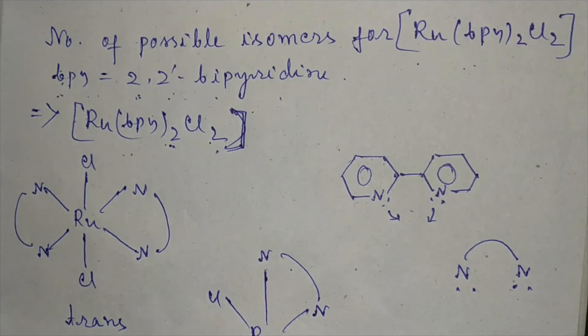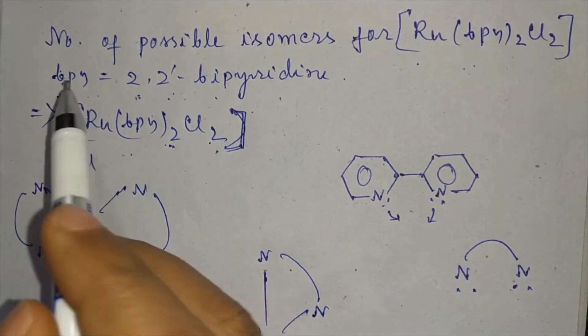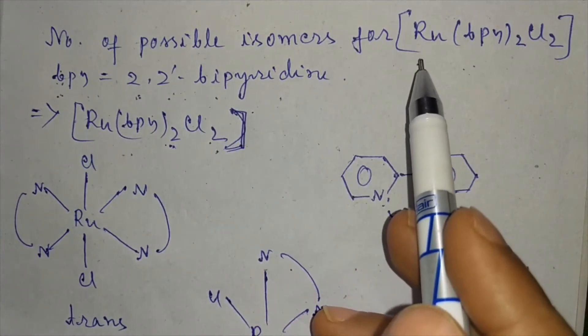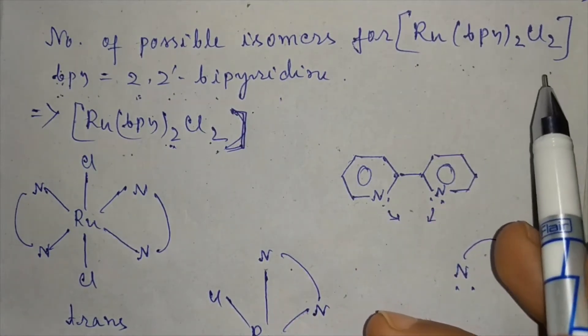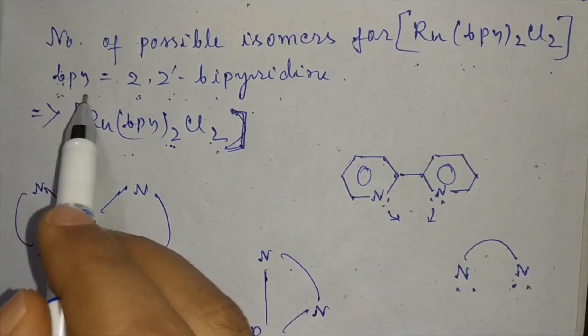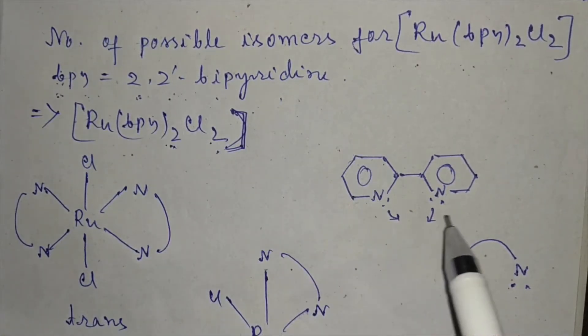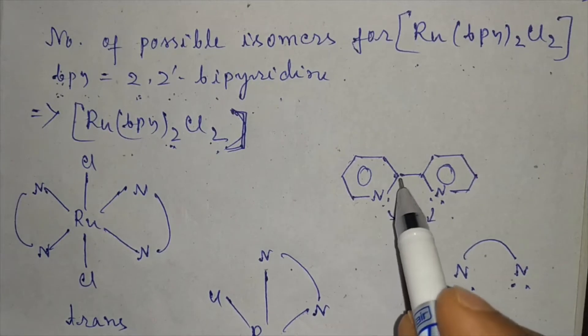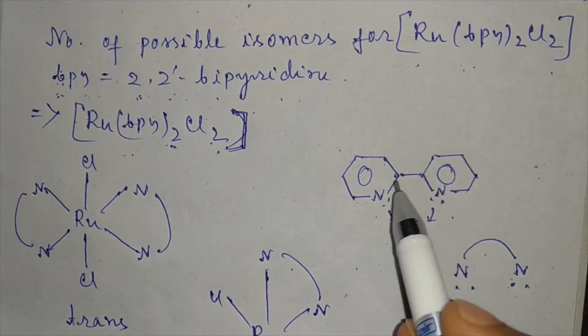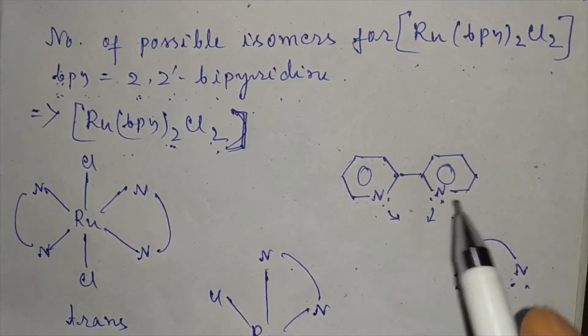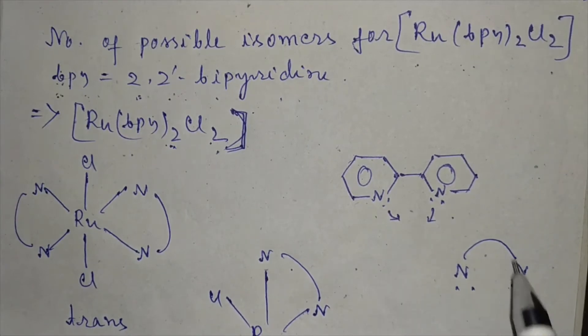Fellow students, today I am here with another question: number of possible isomers for [Ru(bpy)₂Cl₂], where bpy is 2,2'-bipyridine. The structure of bpy is like this - two pyridine nuclei connected in the 2,2' position. It can be written like this.